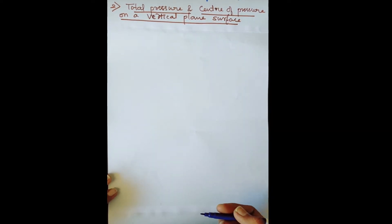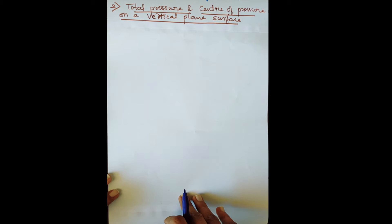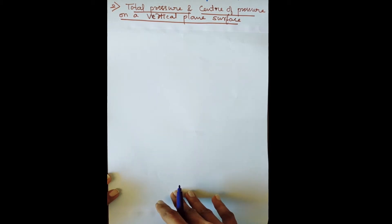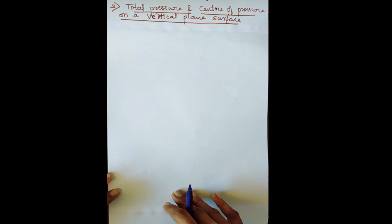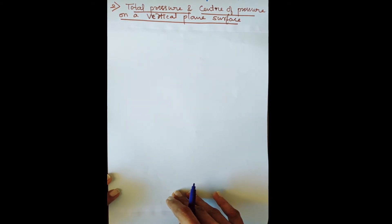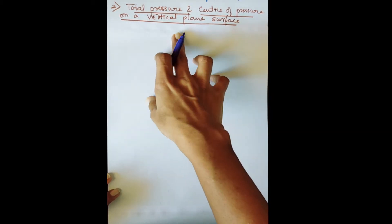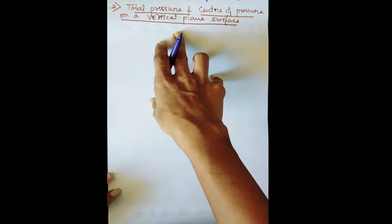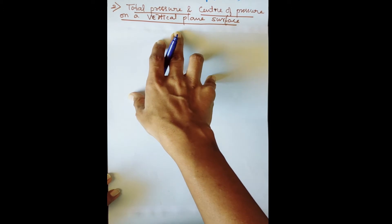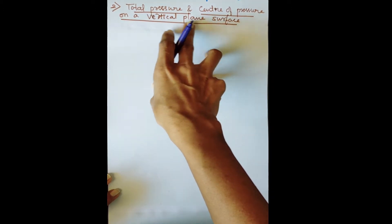Good morning everyone. Welcome back to the course Fluid Mechanics. In the previous class we discussed the determination of total pressure and center of pressure for a horizontal plane surface from Module 2. Today we are going to see another plane surface — the determination of total pressure and center of pressure on a vertical plane surface.